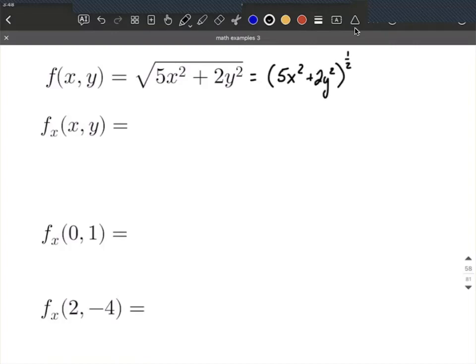Now we can see that we have a function within another function. The 5x² + 2y² is inside this function where it's raised to the 1/2 power, so we're going to have to use the chain rule to take our partial derivative.